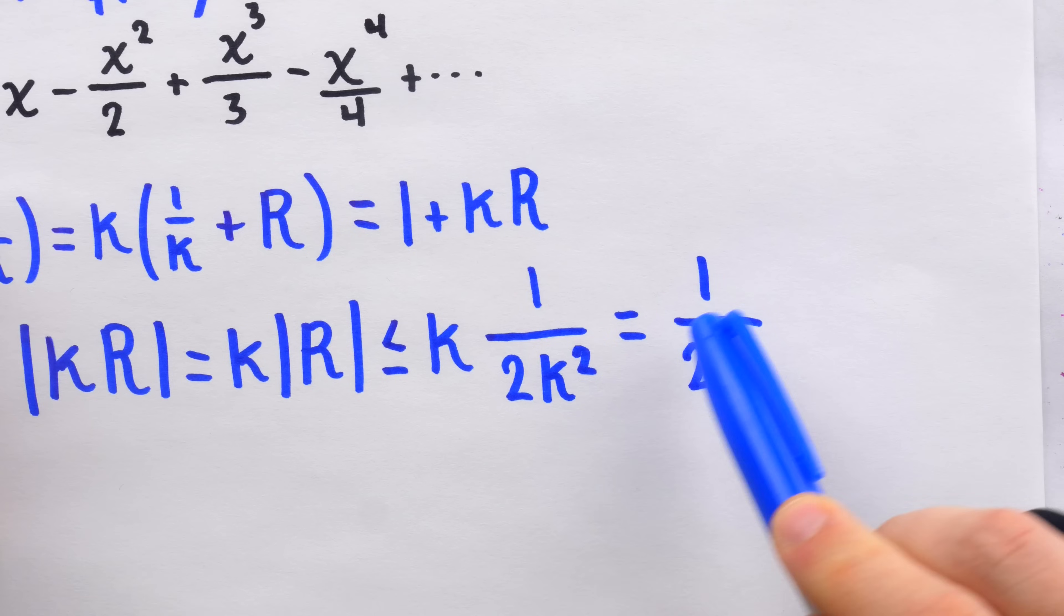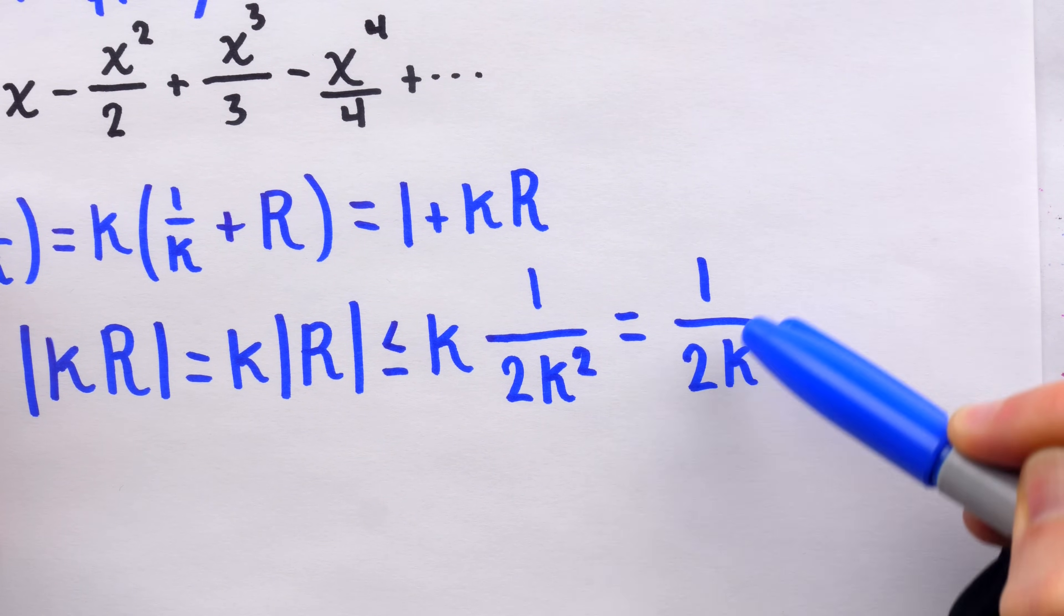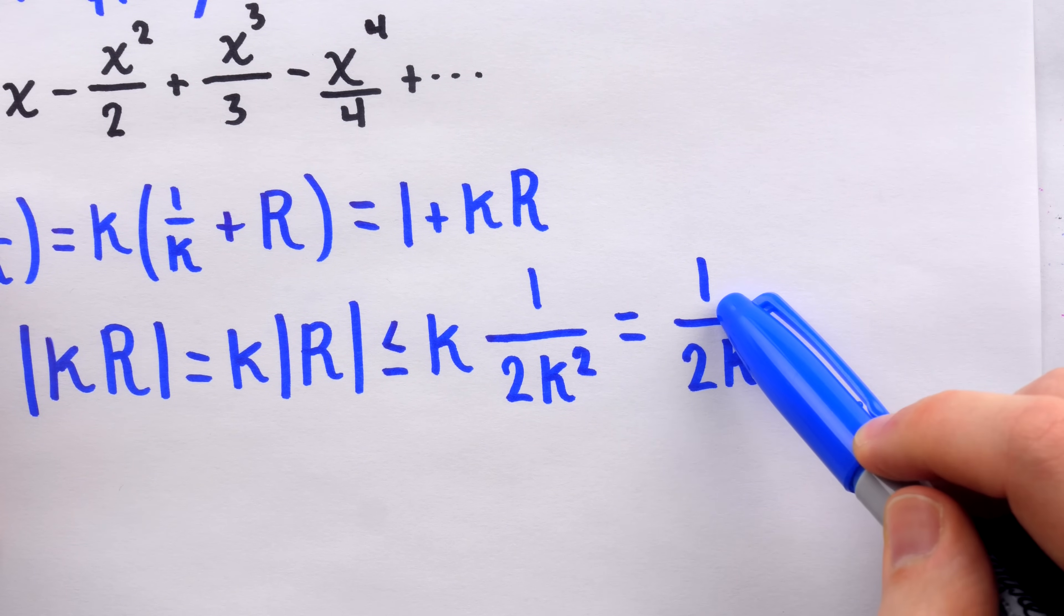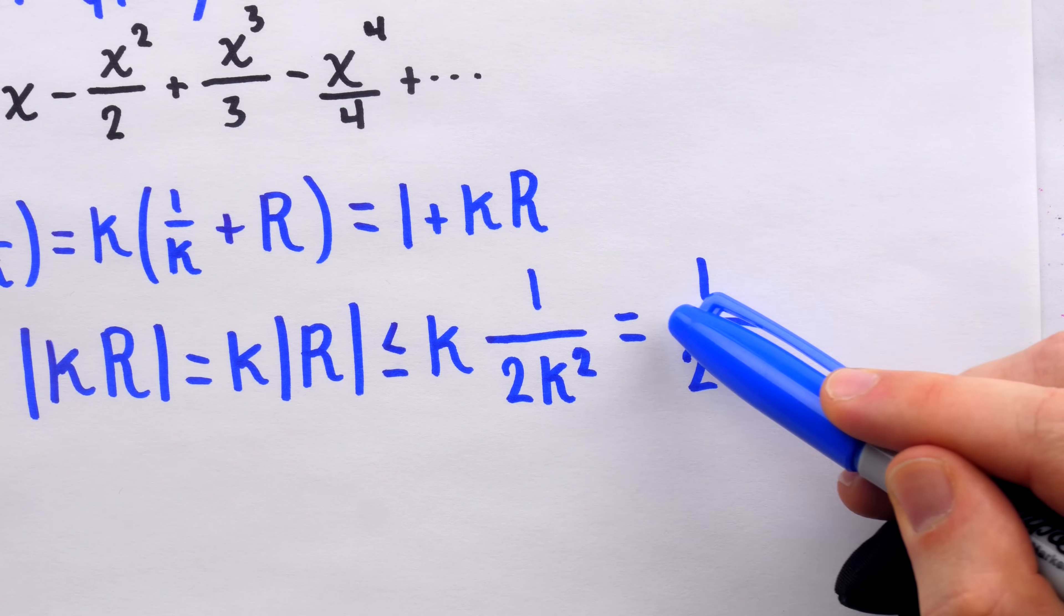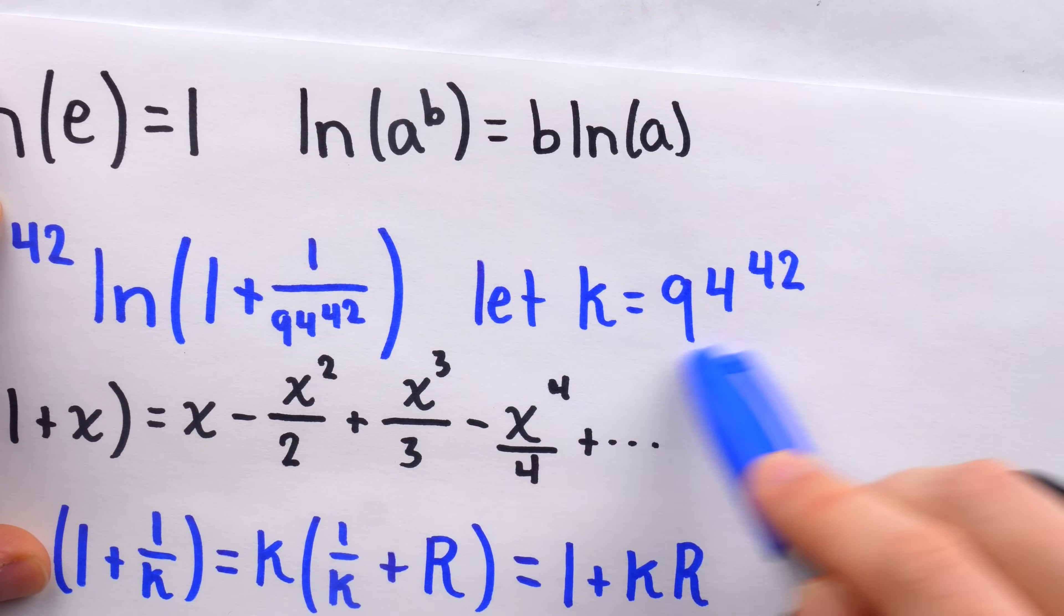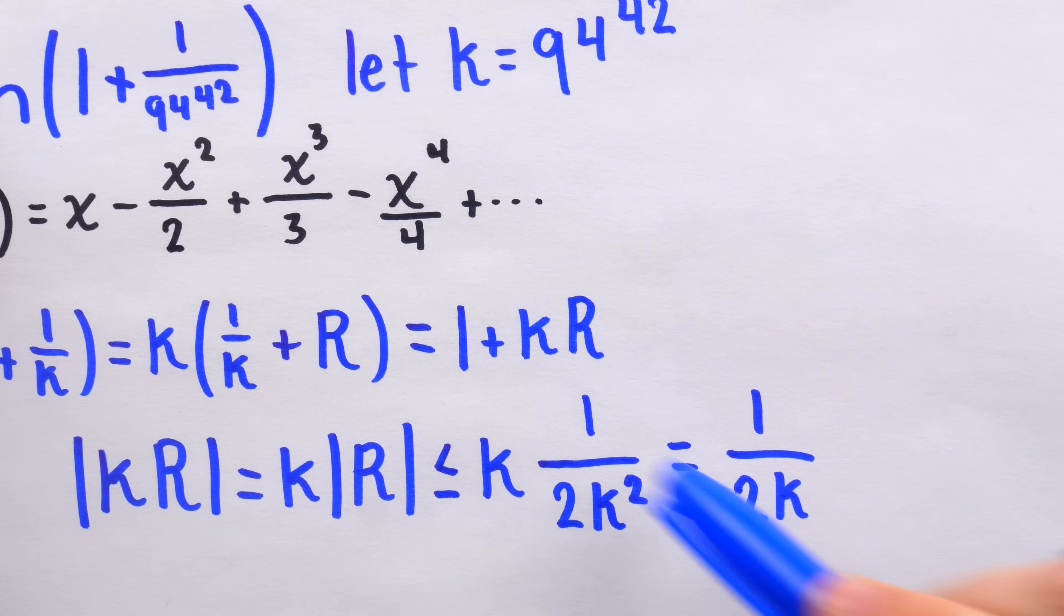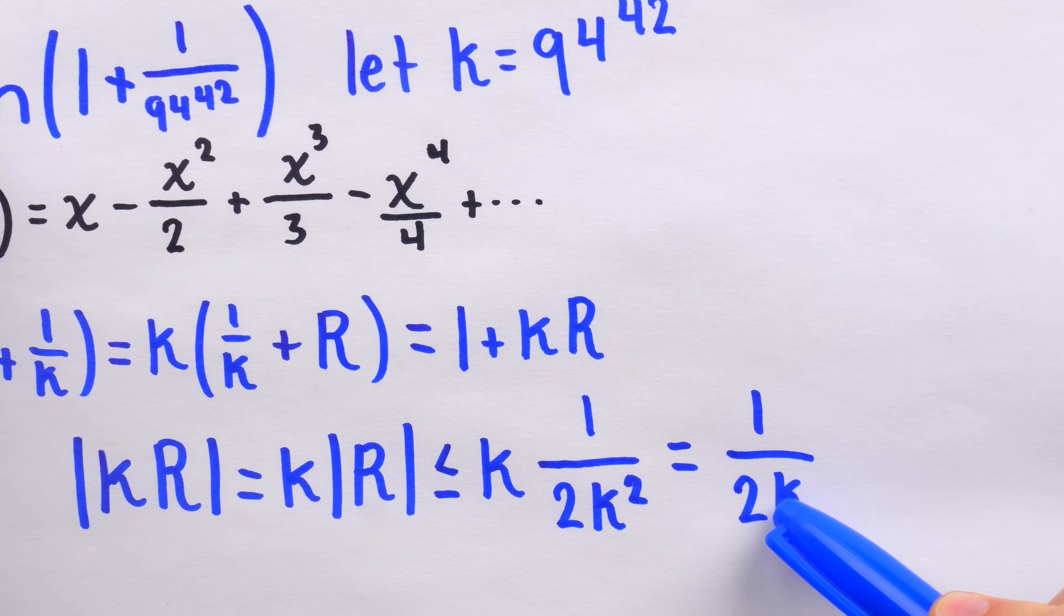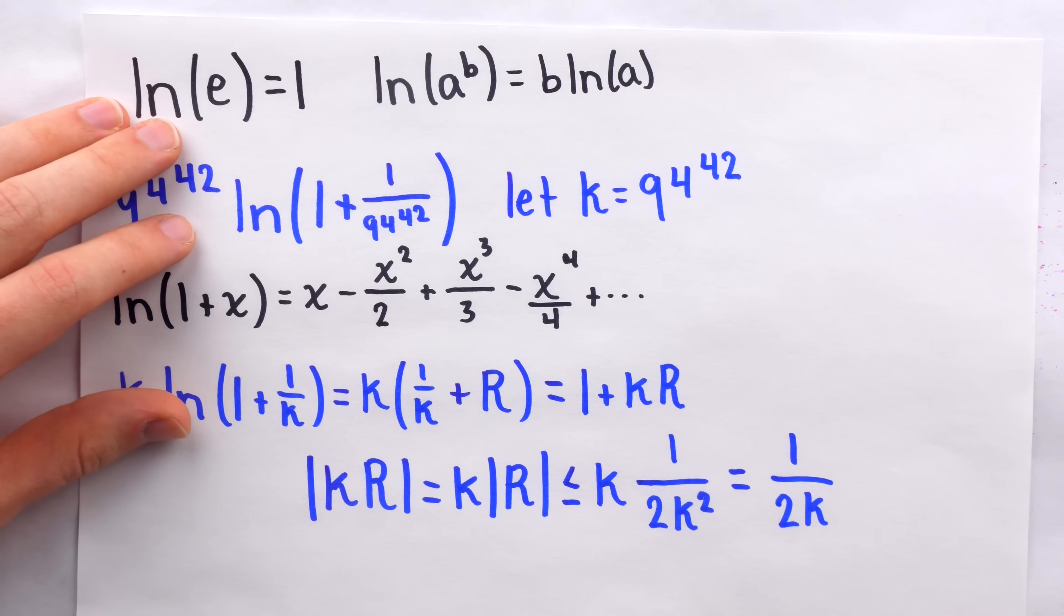So if we take the natural log of Richard Sabey's approximation for e, is it close to 1? Well, it's off by this much, 1 over 2 to the power of k. How much is this? It's extraordinarily small. We know that, of course, because it's 1 divided by 2 times k, and k is this gargantuan number. So yes, it's extremely close to 1. This error is really, really small. Since the natural log of Richard Sabey's approximation is this close to 1, it's not hard to believe that it would be accurate to this many decimal places.